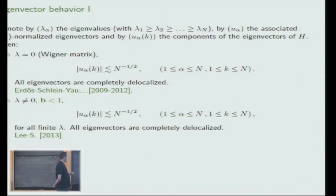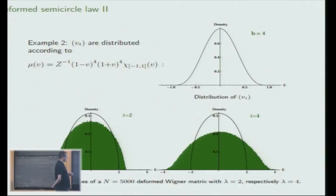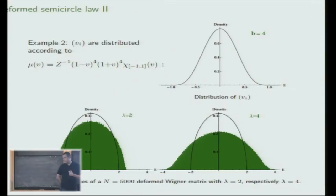However, if this exponent B is strictly larger than 1, the situation changes. For illustration, I choose B equal to 4. In the histogram of the eigenvalues with lambda small—say 2—I still have a semicircular type behavior. But if lambda is sufficiently large, here lambda equal to 4 is large enough, then the decay at the edge changes and I get a tail: a convex decay.